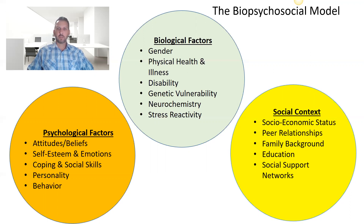Over on the right you have the social context, the social-cultural. So you have socioeconomic status, peer relations, family background, education, social support networks, and of course all the cultural variables of ethnicity and identity and all the different ways that social factors influence.